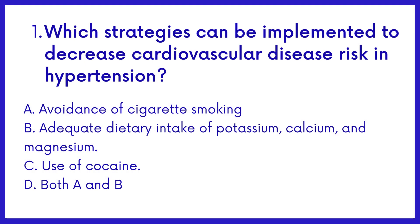Question 1: Which strategies can be implemented to decrease cardiovascular disease risk in hypertension? A. Avoidance of cigarette smoking. B. Adequate dietary intake of potassium, calcium, and magnesium. C. Use of cocaine. D. Both A and B.